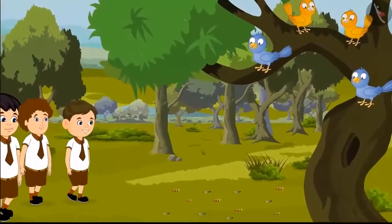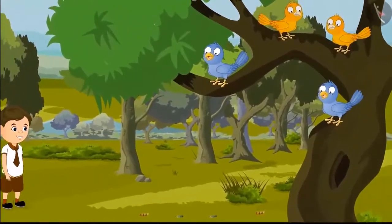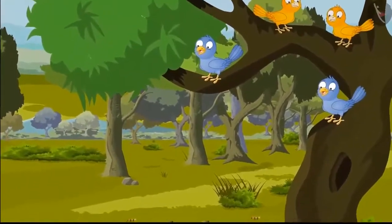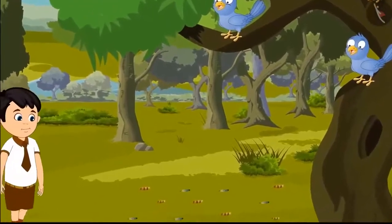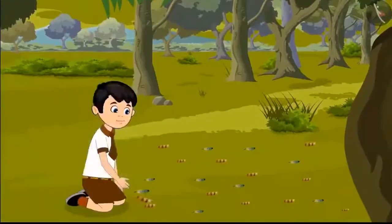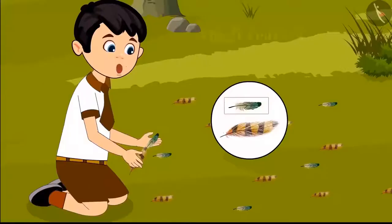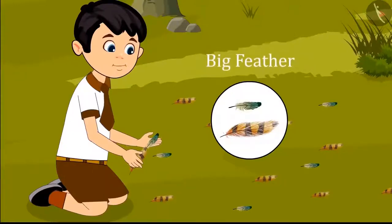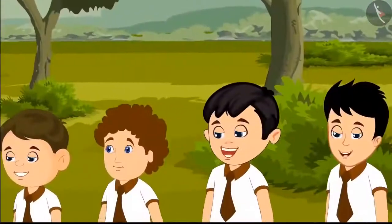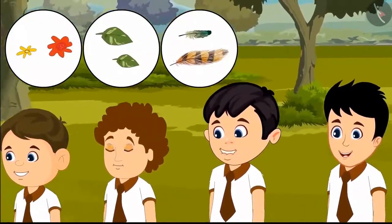While walking, he found a tree on which a lot of birds were sitting. Under that tree were a lot of fallen feathers. Chotu thought to lift two feathers from them — one small feather and one big feather. Oh wow! I got flowers, leaves, and bird feathers. Now I will go home and stick them in my notebook.